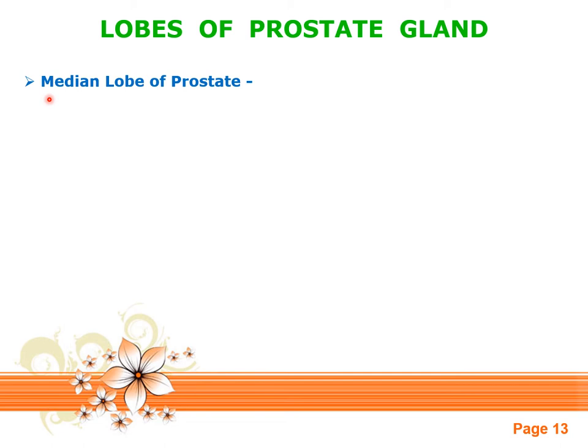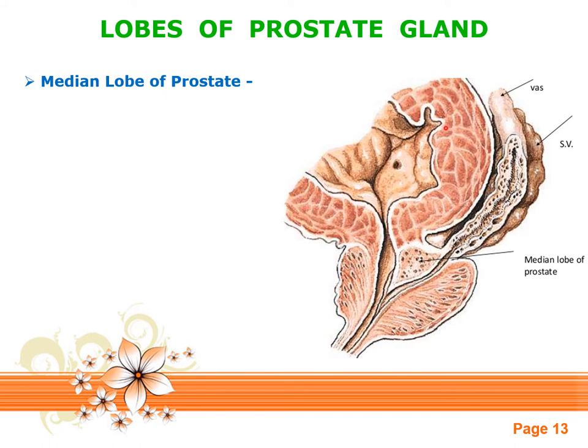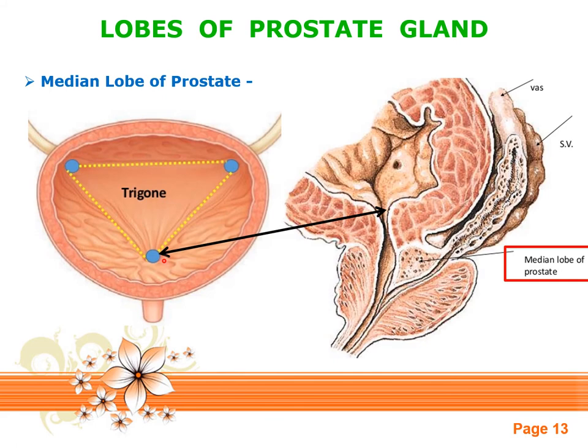The median lobe of the prostate gland projects into the lumen of the urinary bladder by pushing the internal urethral sphincter, so that the mucosa of the urinary bladder bulges at the apex of the internal trigone. This mucosal elevation at the apex of the internal trigone of the urinary bladder is known as uvula vesicae, which is formed by the projection of the median lobe of the prostate gland.